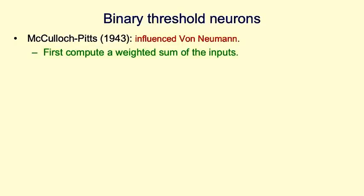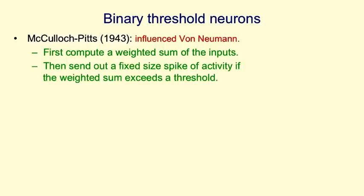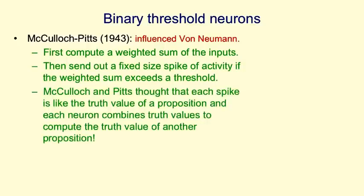Very different from linear neurons are binary threshold neurons that were introduced by McCulloch and Pitts. They actually influenced von Neumann when he was thinking about how to design a universal computer. In a binary threshold neuron, you first compute a weighted sum of the inputs, and then you send out a spike of activity if that weighted sum exceeds the threshold. McCulloch and Pitts thought that the spikes were like the truth values of propositions.